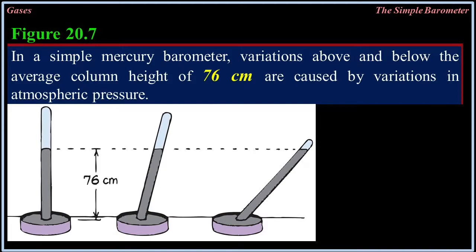Health-wise, mercury is a no-no and is something you don't want to play around with. In a simple mercury barometer, variations above and below the average column height of 76 centimeters are caused by variations in atmospheric pressure.